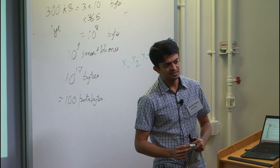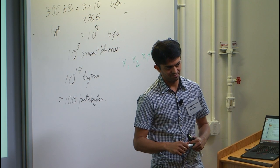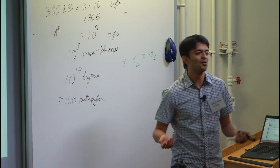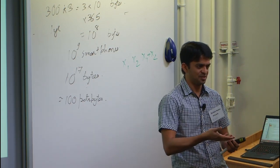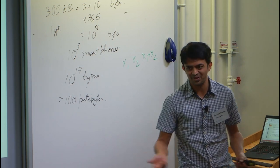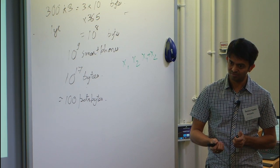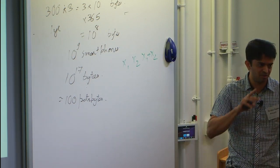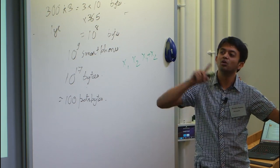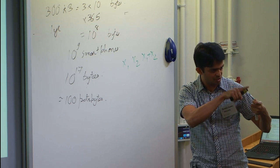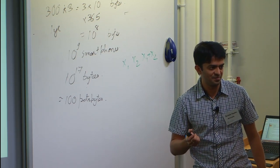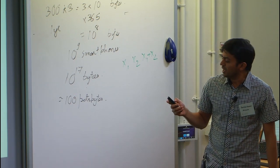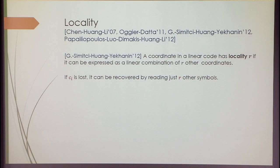To clarify: there must exist one fixed set of r other coordinates. The simplest example is a 2,3 parity check code with x1, x2, x1+x2 — every coordinate has locality 2 because you can recover x1 by reading x2 and x1+x2. In any code, the locality of a particular coordinate is: suppose this coordinate is lost — what is the smallest number of other coordinates you can read to express this as a linear combination of those coordinates? So if the i-th coordinate is lost, there exists a set of r coordinates tuned to that particular coordinate which will recover it.